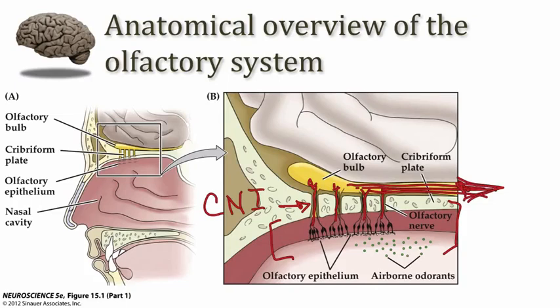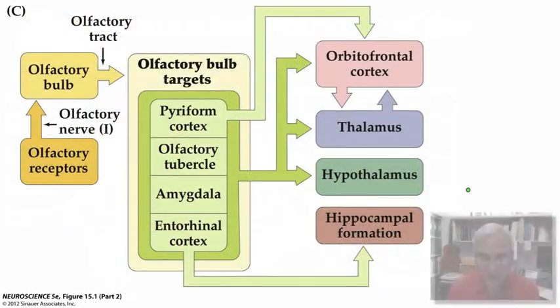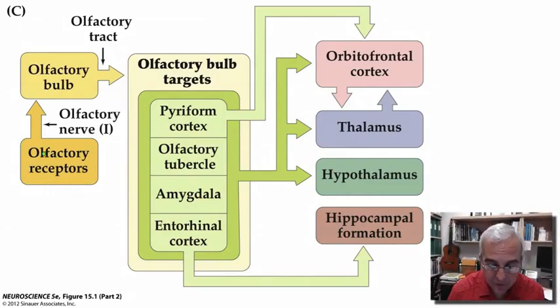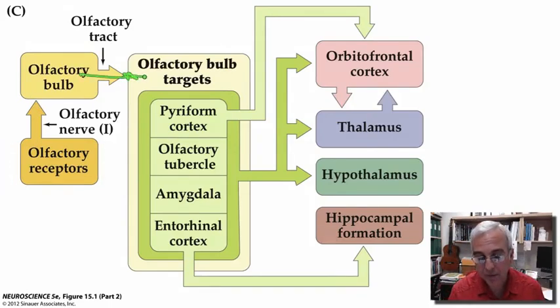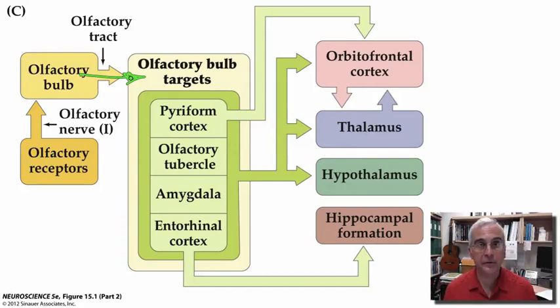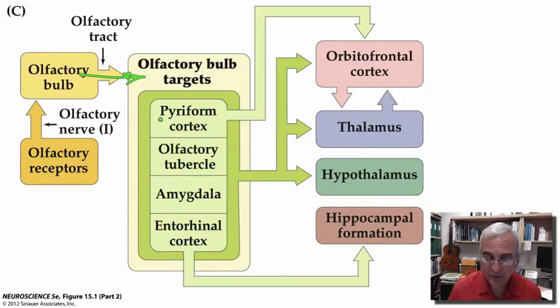The mitral cells are the principal projection cells that connect the olfactory bulb to the rest of the brain, and these structures are part of what we call the olfactory cortex. More schematically, the olfactory epithelium is where we find our olfactory receptors; cranial nerve 1 connects those receptor neurons to mitral cells in the olfactory bulb. The axons of the mitral cells project through the lateral olfactory tract to a series of targets found in the ventral and medial aspects of the forebrain — collectively called the olfactory cortex. Some of these structures are quite prominent cortical structures, such as the piriform cortex.